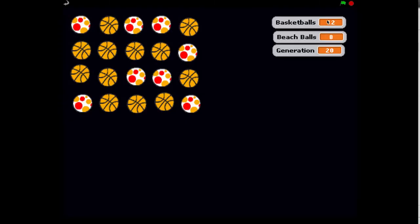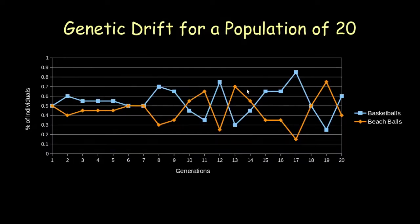Now 16 generations later, we can see that we have 12 basketballs and 8 beach balls. Biologists use this data to plot graphs to map out how the number of individuals with a trait has changed over time.